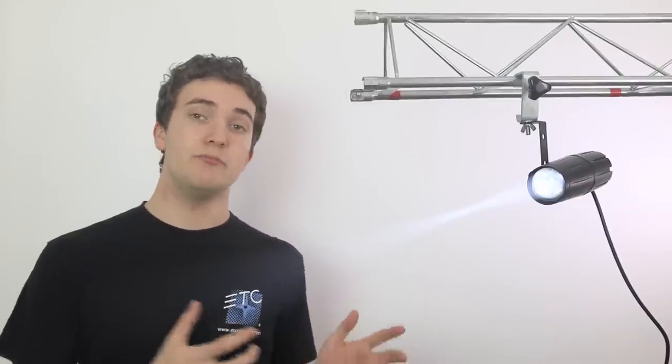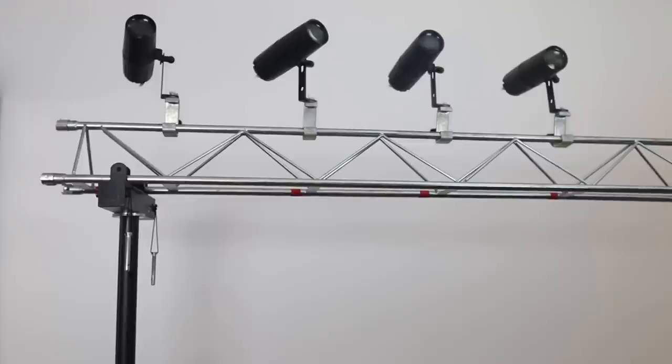Another great use for these lights is creating beam effects. Mount a load of them on your truss, point them all in different directions, and just add smoke. You can achieve a really nice look with the beams shooting all over the room. You're limited by the fact you only have on-off control and can't move them, but sometimes quantity is better than quality.